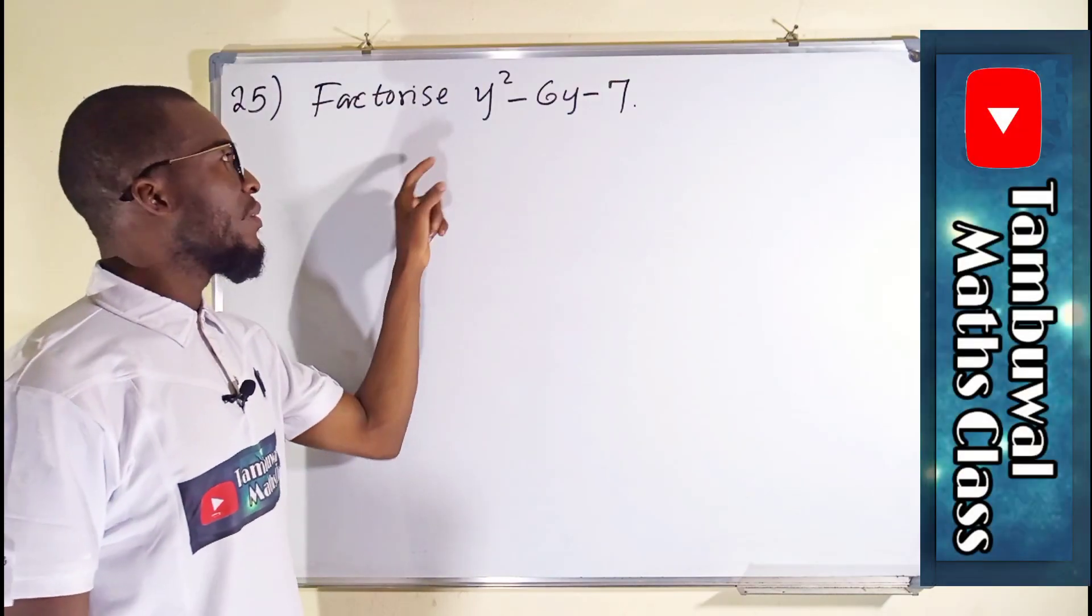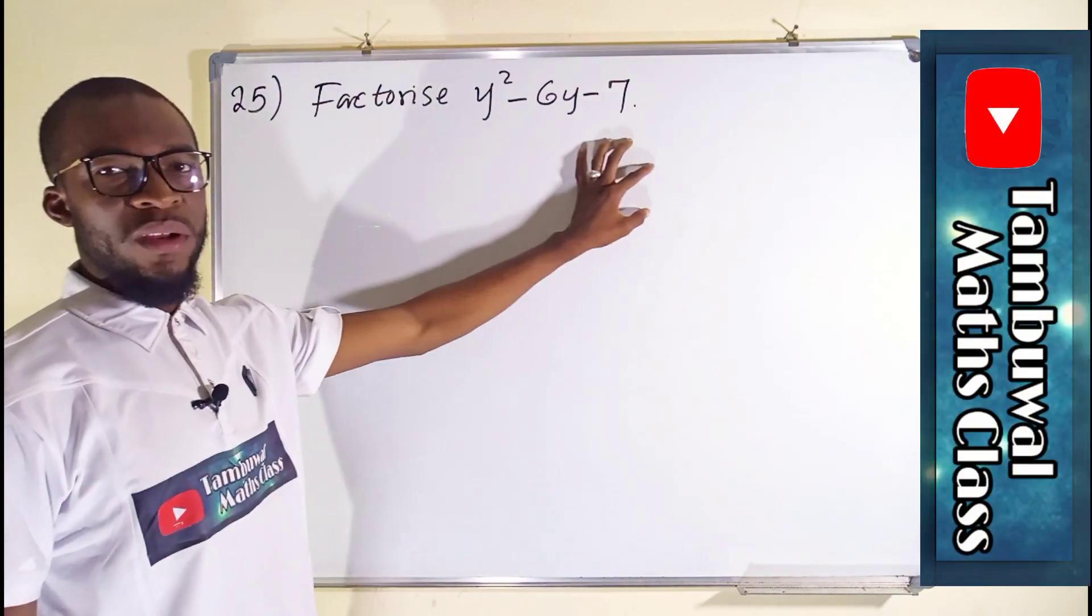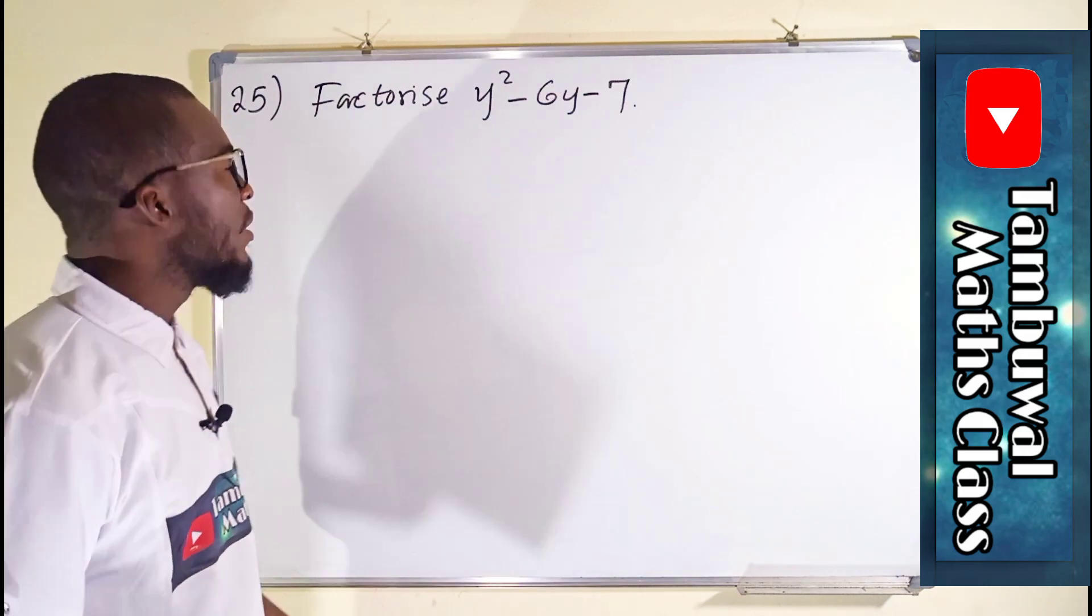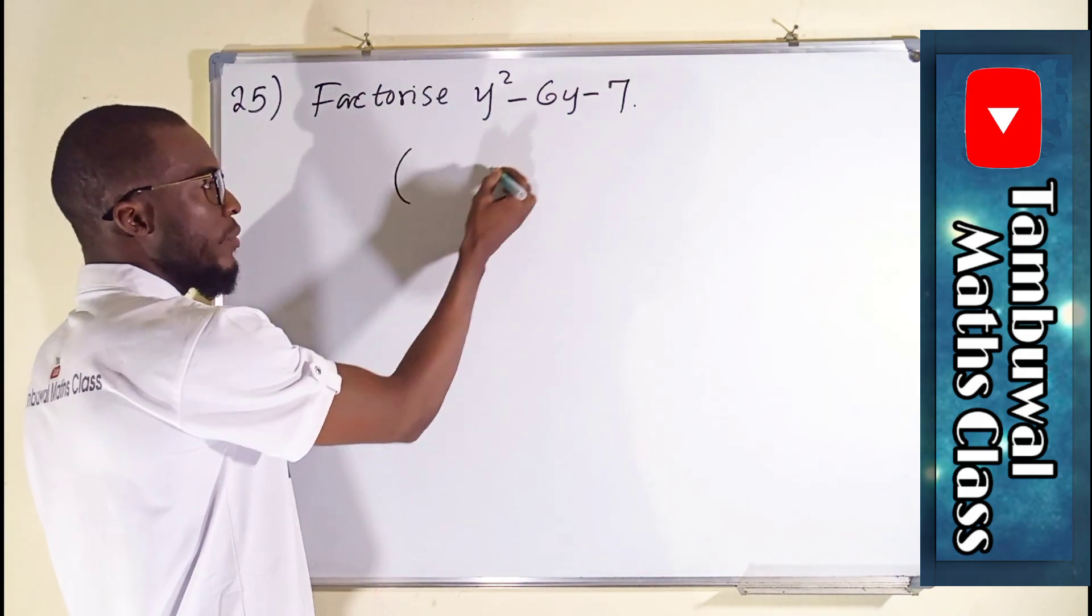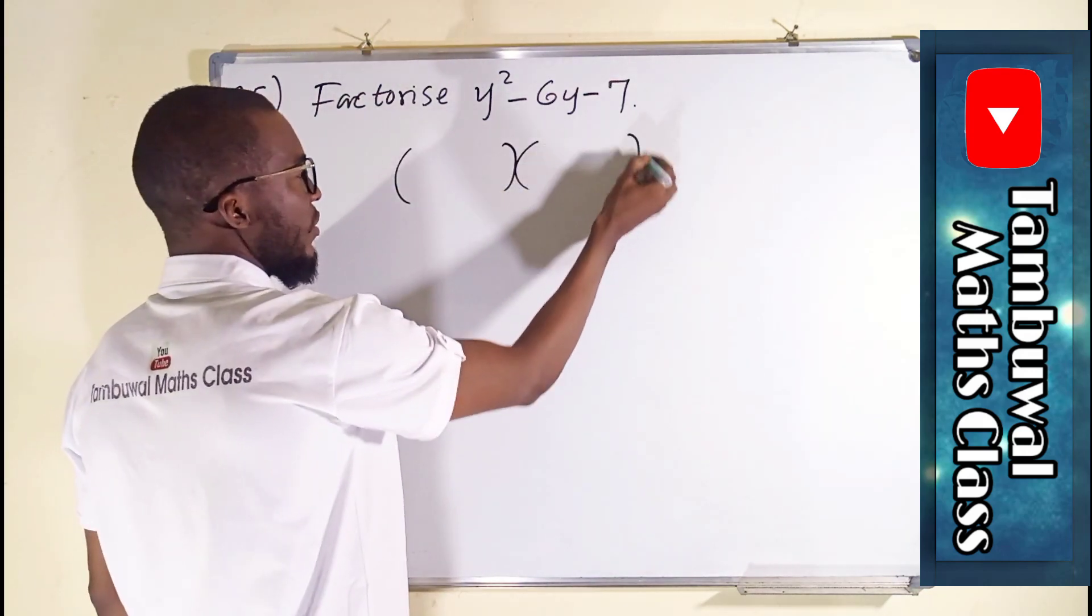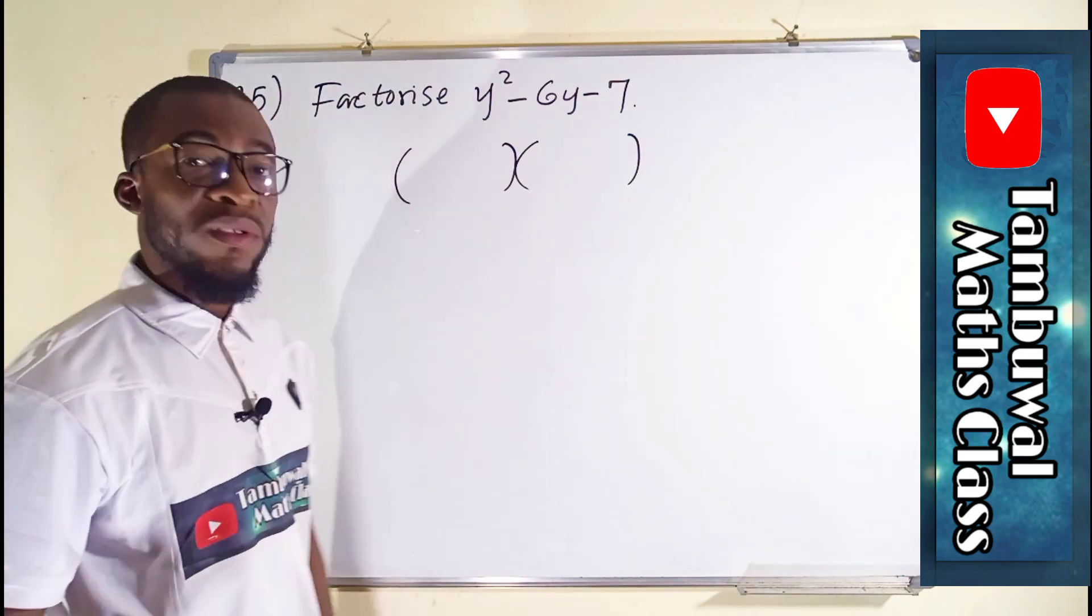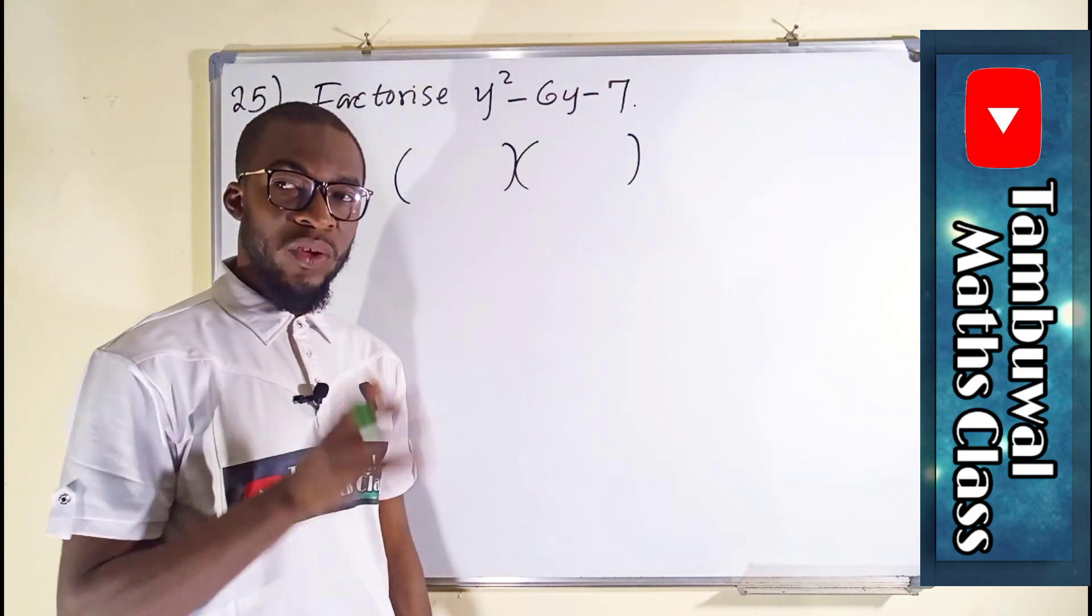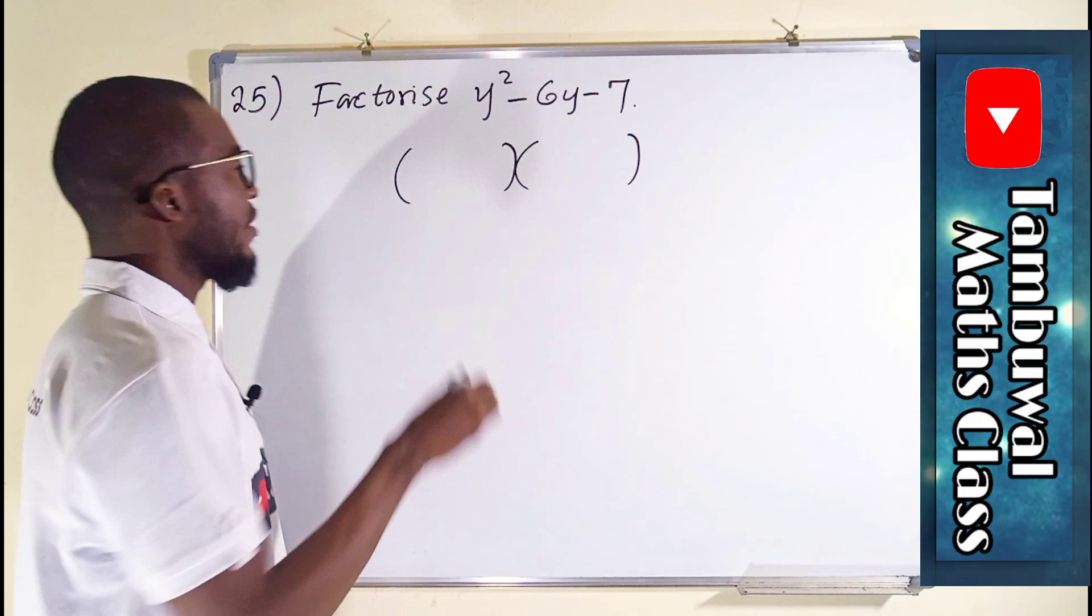Question number 25 says we should factorize this quadratic expression. Just form your two factors. This time around you don't have to set them to be equal to zero because we are not solving. We are only factorizing.